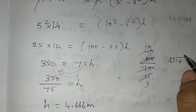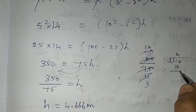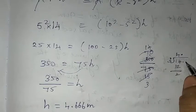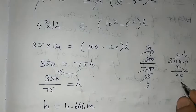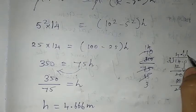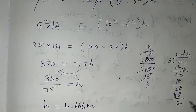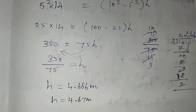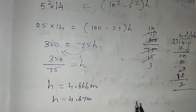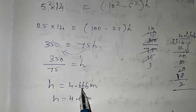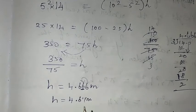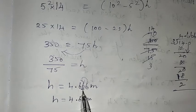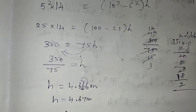Now let's divide. 14 divided by 3: 3 fours are 12, balance 2. Next decimal — bring down 0, making 20. 3 sevens are 21, so 3 sixes are 18, balance 2 again. This repeats, giving 4.666... which is a recurring decimal. Rounding to two decimal places, the height is approximately 4.67 meters.